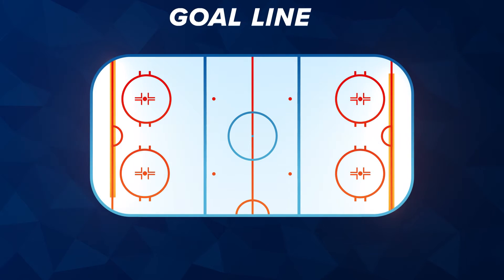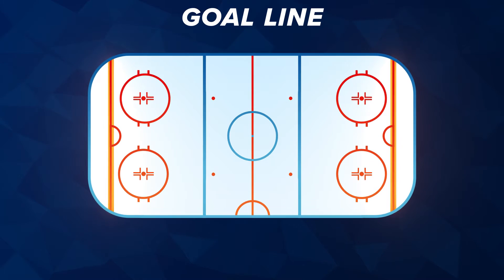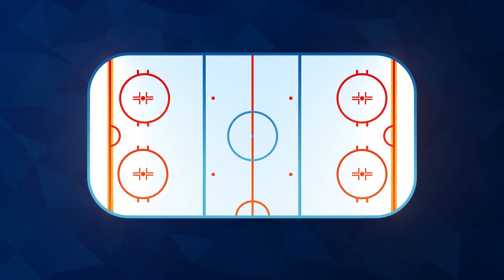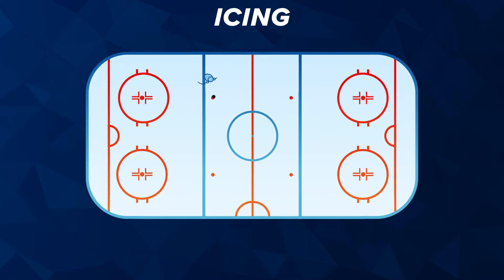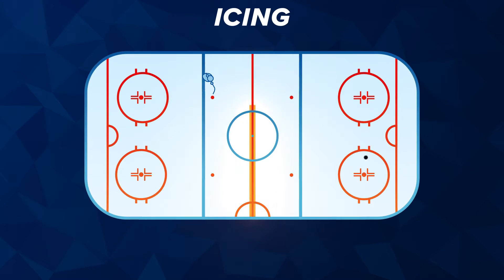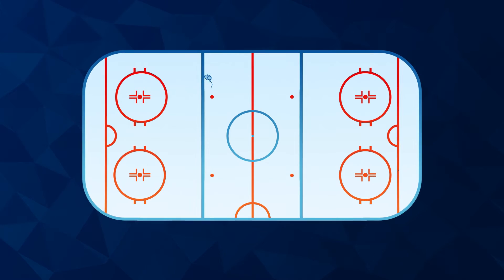Goal line: the two red lines that run the width of the rink and are lined up with the goal opening. Icing: if a player shoots the puck and it crosses the center line and the opponent's goal line, that's icing.